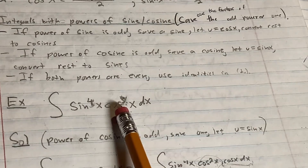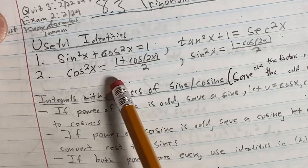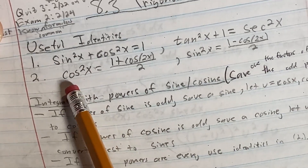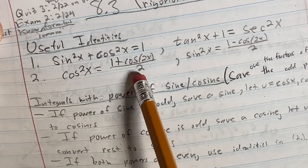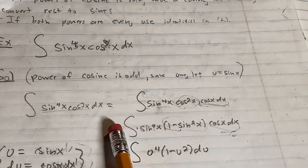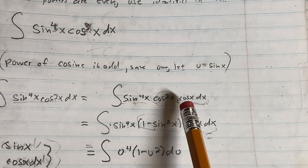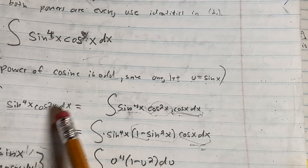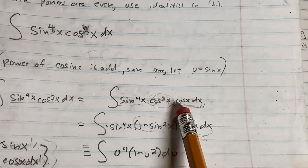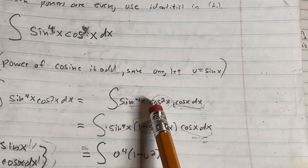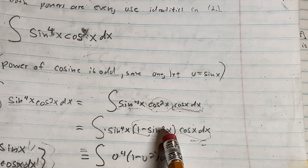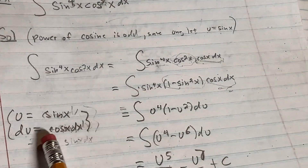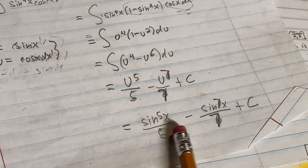If both powers are even, use these identities and convert everything to cosine. In this example, we save a copy of the cosine — so you have cosine x dx, because cosine cubed is cosine squared times cosine. Since u is going to be sine, we have to get rid of the cosine squared: cosine squared is 1 minus sine squared. Now we're in a position to make our substitution: let u be sine x, so du is cosine x dx, and then we finish the problem.